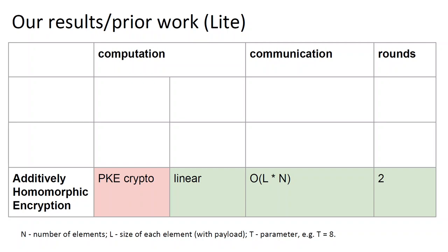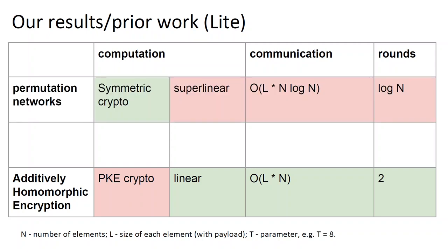Secret shared shuffle is a special case of generic two-party computation, and therefore it can be implemented using standard solutions. But in this work, we focus on efficient implementations. One simple way to implement it efficiently is to use additively homomorphic encryption, where roughly speaking, Bob encrypts his database, sends it to Alice, and Alice permutes it as needed, and adds random shares homomorphically and sends them back. This protocol is very simple, and it has linear computation and communication complexity, and it only takes two rounds. But the downside is that it uses expensive public key operations, and at the end it is much less efficient than asymptotically worse, symmetric key-based approach based on shuffling networks.